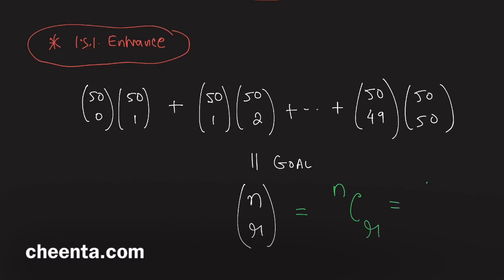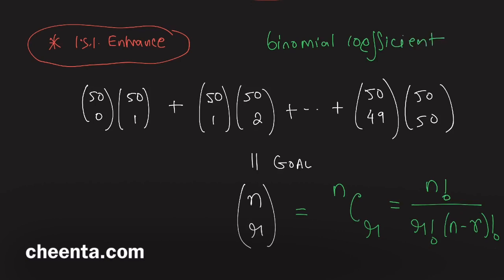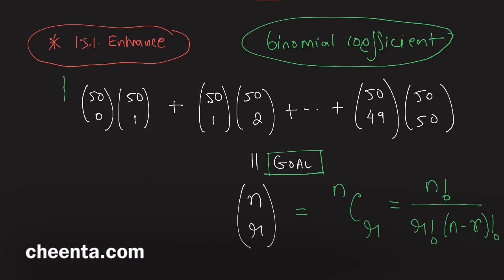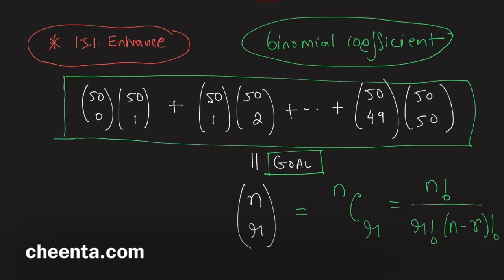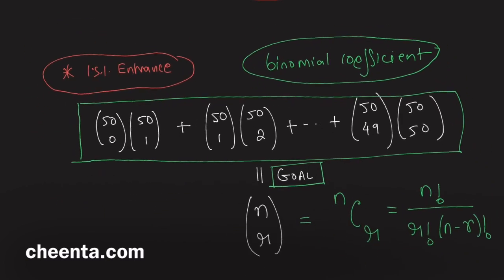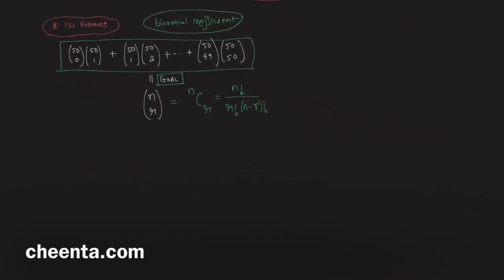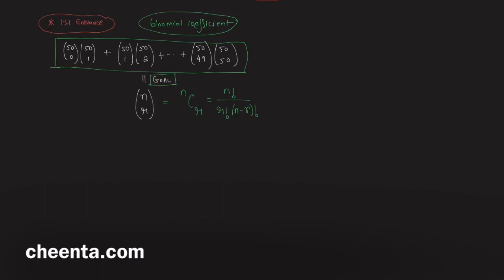n choose r, also written as nCr, has the formula n factorial over r factorial times (n minus r) factorial. This is sometimes known as a binomial coefficient. If you don't know binomial coefficients, go understand those first, then come back. We want to convert this giant sum of products of binomial coefficients into one binomial coefficient using a combinatorial argument. To do that, we need a lemma.